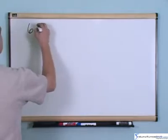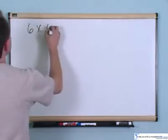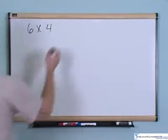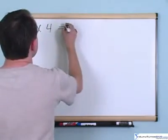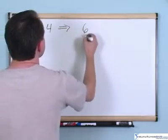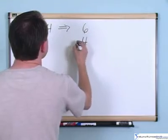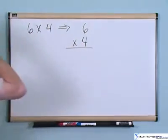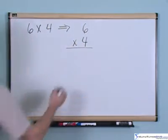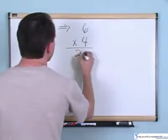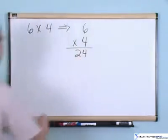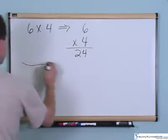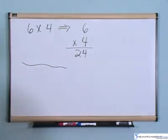Again, 6 times 4. You should know what that is. I'm going to write it on top of each other with a multiplication symbol. 6 times 4 — you should remember from your times tables — is 24. I'm just going to write that down.